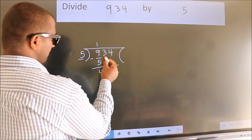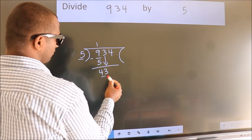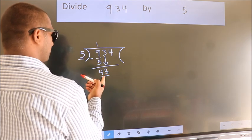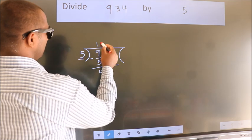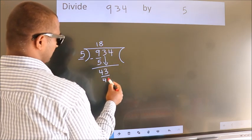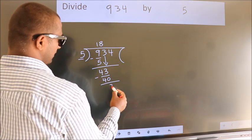After this, bring down the next number. So 3 down. So 43. A number close to 43 in the 5 table is 5 times 8 is 40. Now we subtract. We get 3.